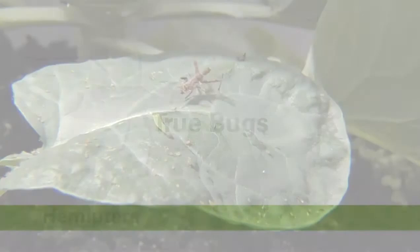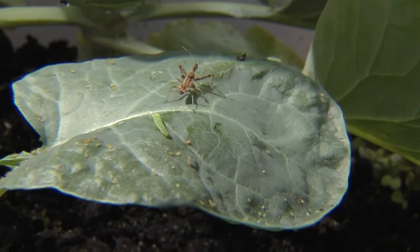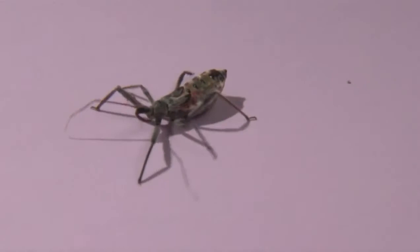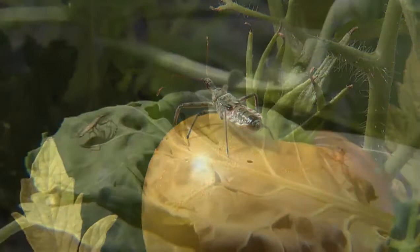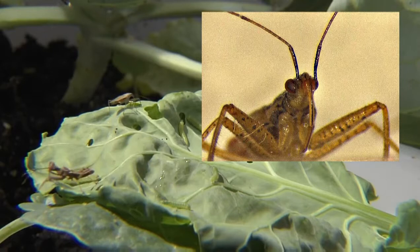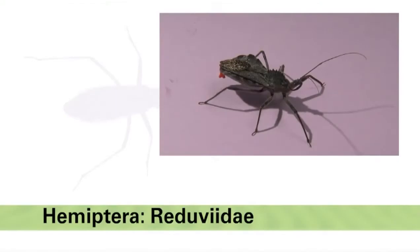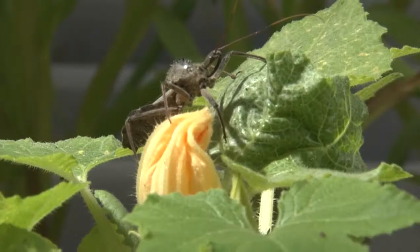Insects in the order Hemiptera are called the true bugs. Though many species in this order are plant feeders, many others are predatory. True bugs exhibit gradual metamorphosis, growing from the egg stage through several juvenile stages to a winged adult without a pupal stage. The immature stages are called nymphs. Nymphs resemble adults, but with shortened wing pads instead of fully formed wings. All true bugs have piercing, sucking mouthparts that form a straw-like beak. One of the largest true bug predators is the wheel bug in the assassin bug family Reduviidae. Adults range in size from one-half to one-and-three-fourths inches in length.